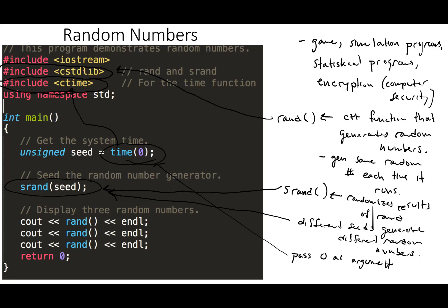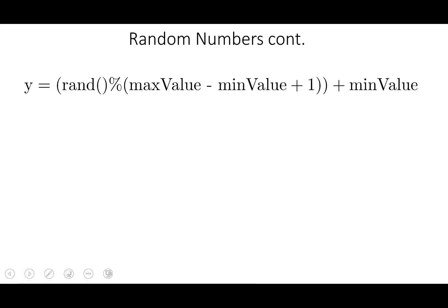So if we want to limit the range of random numbers, we're going to use this equation. The way this works is you have a variable that's your max value and a variable that's your min value. So let's say you want to limit the range between 1 and 10. Then your max value equals 10, and your min value is equal to 1.